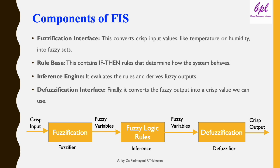An FIS consists of four key components: the fuzzification interface, the rule base, the inference engine, and the defuzzification interface. The fuzzification interface converts crisp inputs into fuzzy sets. The rule base contains a set of if-then rules that govern the system. The inference engine evaluates the rules and derives fuzzy outputs. The defuzzification interface converts the fuzzy output back into a crisp value. These components work together to handle uncertainty and make decisions.